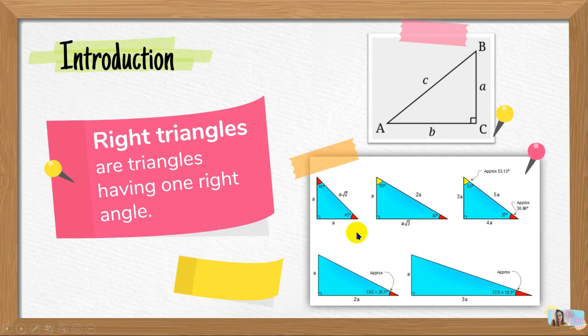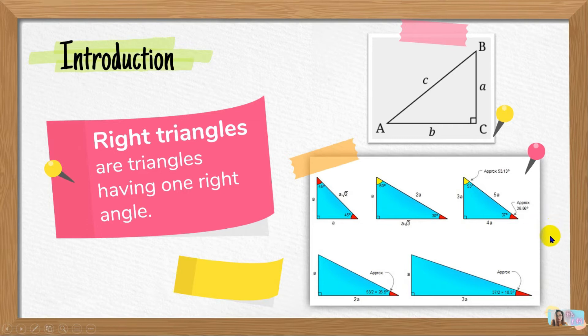Here we have the different special types of right triangle, wherein we have two sides that are congruent, a side that is twice the measurement of the other side, and also a side wherein it is three times as long as the other side. These five right triangles are considered to be the special types of right triangle. Now we're done with the definition and illustration of right triangles.